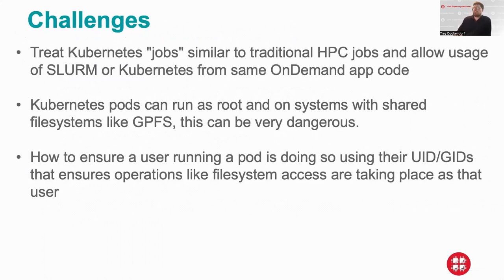Some of the challenges in supporting HPC jobs in Kubernetes: we wanted to treat the jobs similar to traditional HPC jobs and allow OnDemand apps to submit to both Slurm and Kubernetes. Because Kubernetes pods can run as root, that presented challenges for shared file system access like GPFS or NFS home directories, and we had to ensure that the user's processes running in the pod were all being run as that user's UID and GIDs — mainly to treat them correctly for file system access.